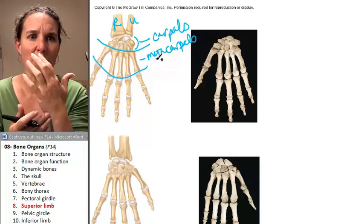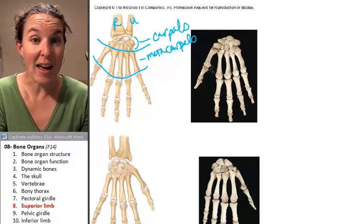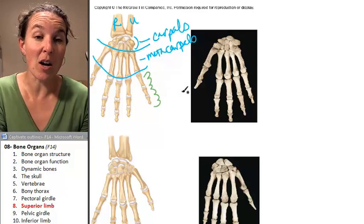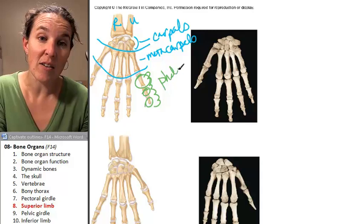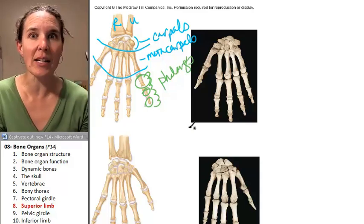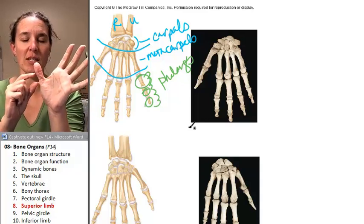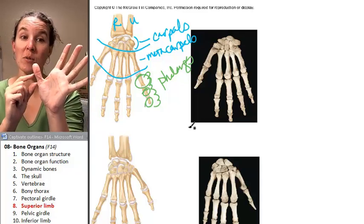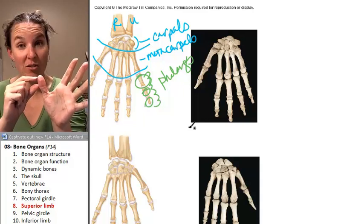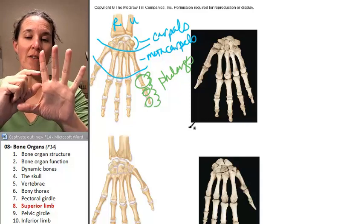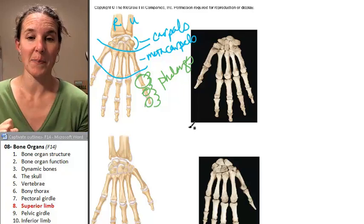Every one of your carpals has a name, but we're not going to learn those right now. Distal to the metacarpals, we have three phalanges on each finger — except for your thumb, which only has two. You have a proximal phalanx and a distal phalanx on the thumb. On the other fingers, you have a proximal phalanx, a middle phalanx, and a distal phalanx.